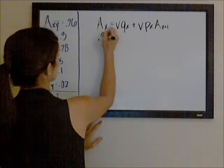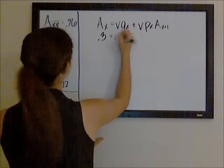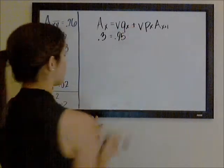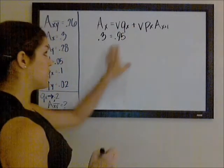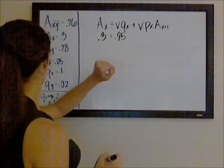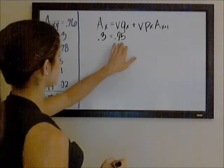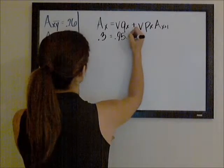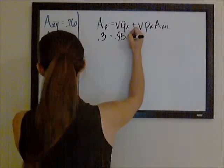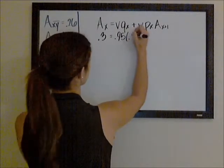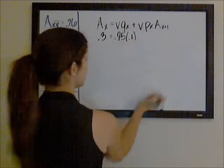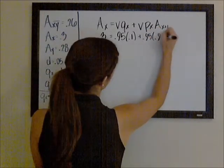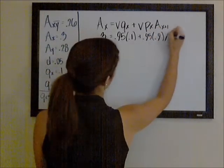We're told AX, our discount rate is five percent, so our discount factor is going to be 0.95. QX originally is 0.1, so PX will be 0.9.